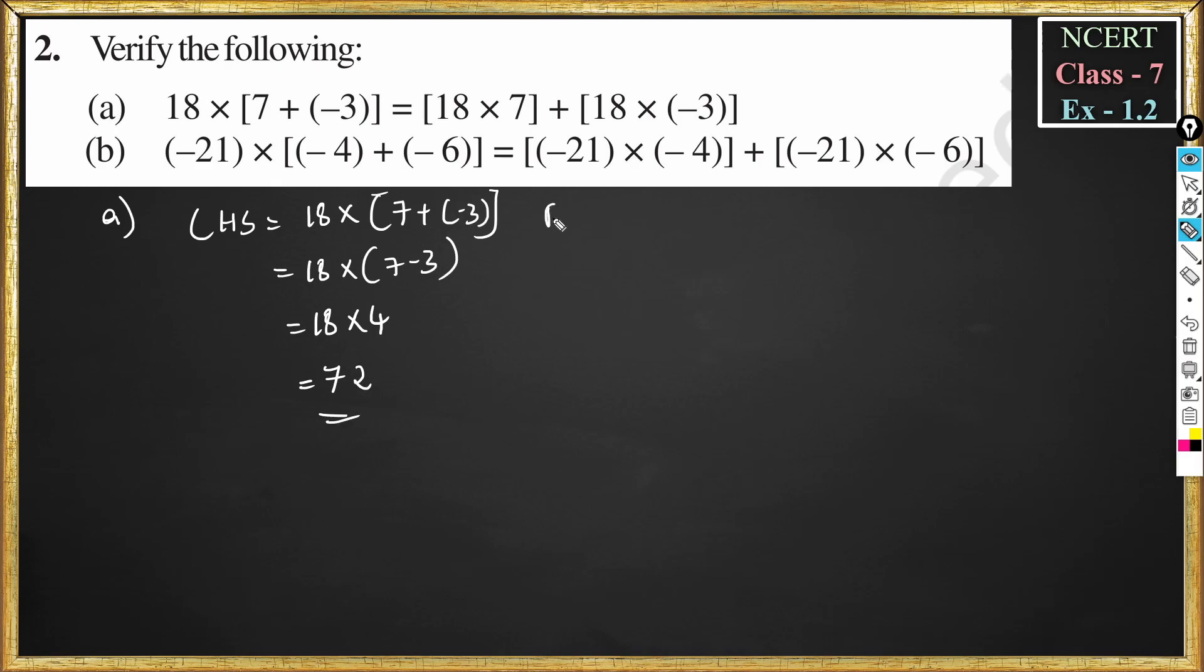So now we will take RHS. RHS is 18 into 7 plus 18 into minus 3. 18 into 7 is 126. Plus 18 into 3 is 54, plus into minus is minus. So this becomes 126 plus of minus is minus 54. So 126 minus 54, 6 minus 4 is 2 and 12 minus 5 is 7.